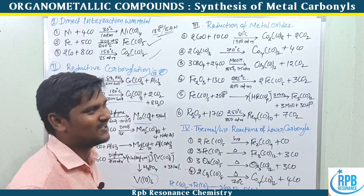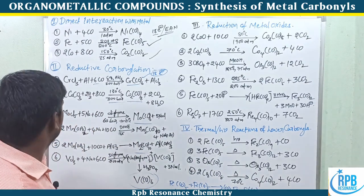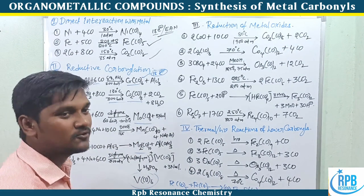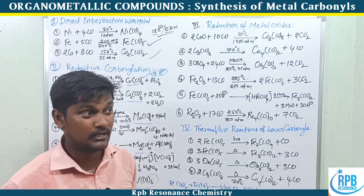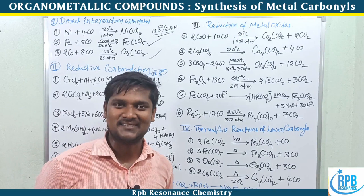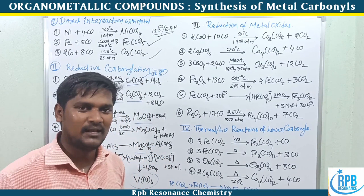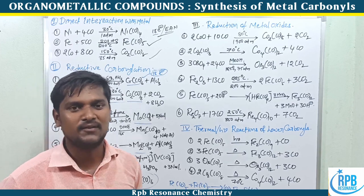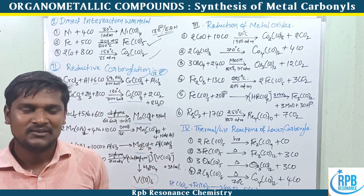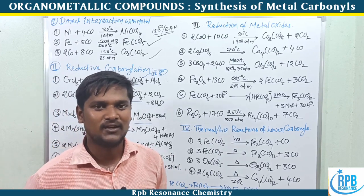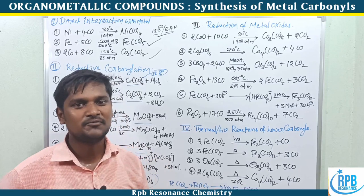These are the simple reactions for the preparation of metal carbonyls. In total, approximately 19 reactions are covered across the four methods, which are very helpful for CSIR and GATE preparation. I'll upload another video on metal carbonyls covering the reactions of metal carbonyls in more detail. Thank you for watching.